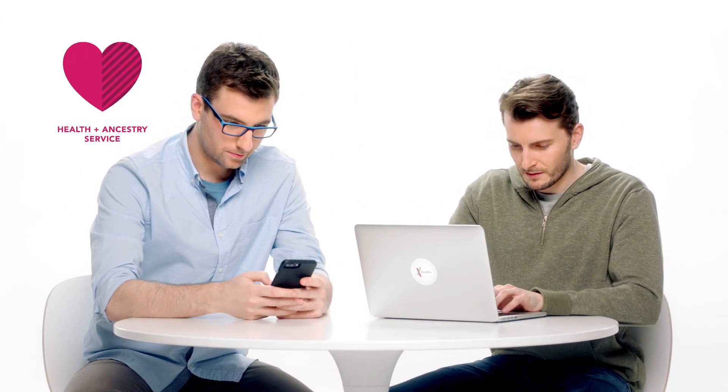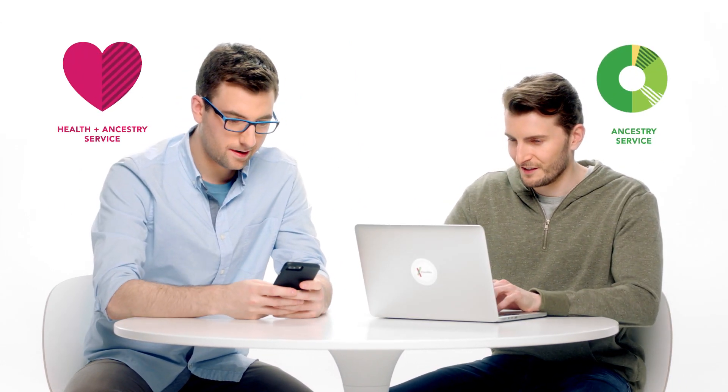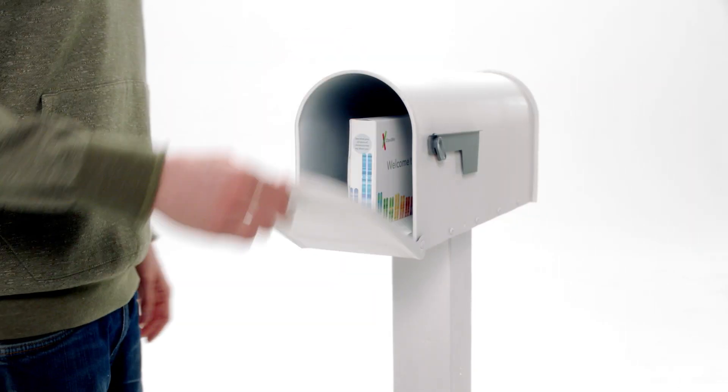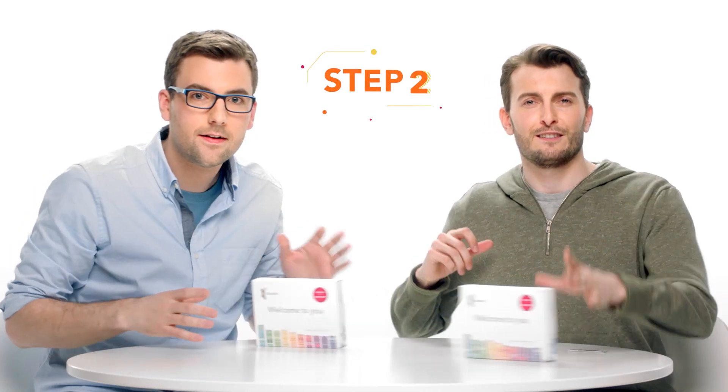Cheers. Not quite. First, you have to order your kit. Oh. Order your 23andMe kit online and choose either the Health and Ancestry or Ancestry service. After your kit arrives in the mail, read and follow the instructions.